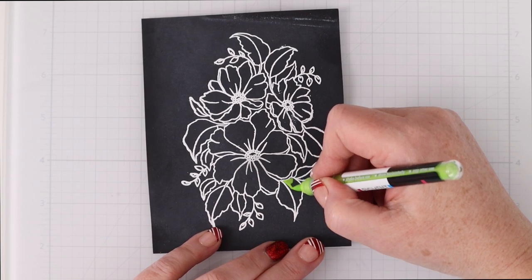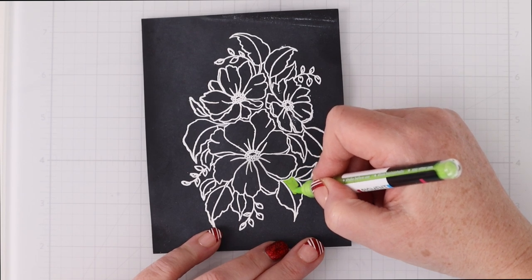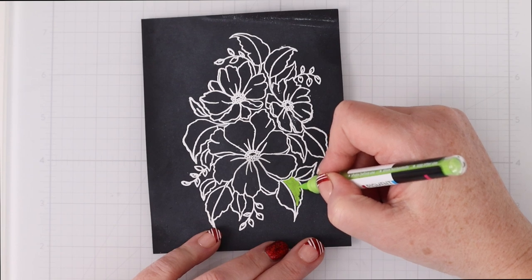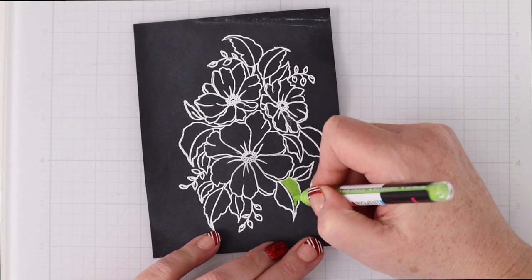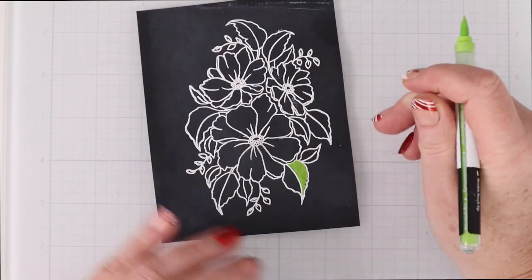So to start out I'm going to start with the leaves and the green that I have and I'm just going to color them in. I'm not going to worry about doing anything fancy at this point. I just want to see the kind of coverage that I can get and it's pretty good I have to say.